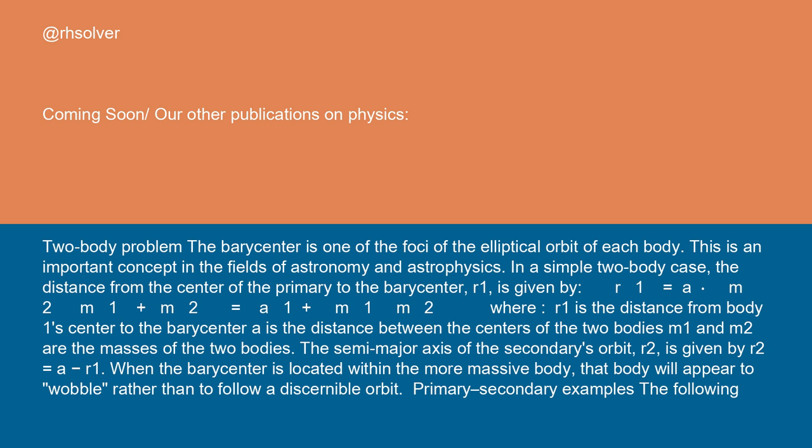The semi-major axis of the secondary orbit, R2, is given by R2 = a - R1. When the barycenter is located within the more massive body, that body will appear to wobble rather than follow a discernible orbit.